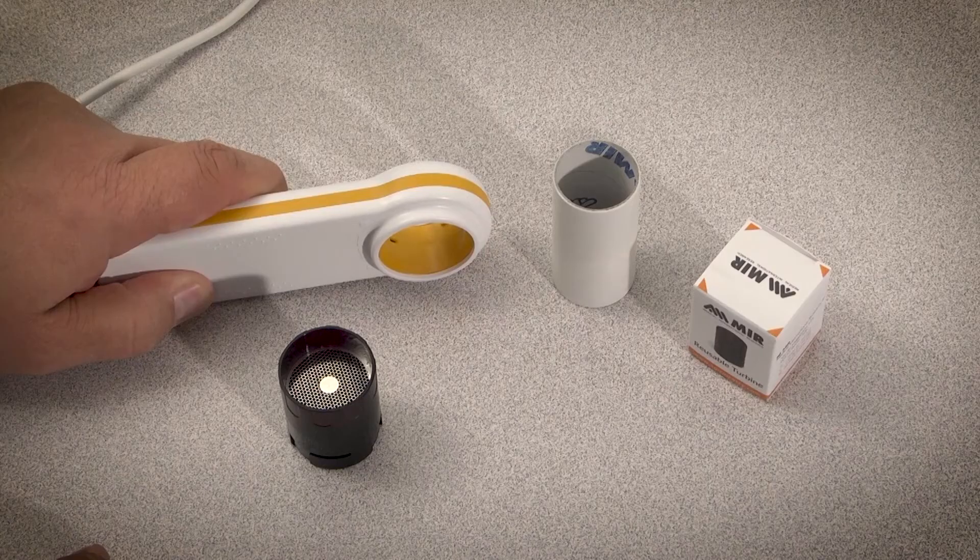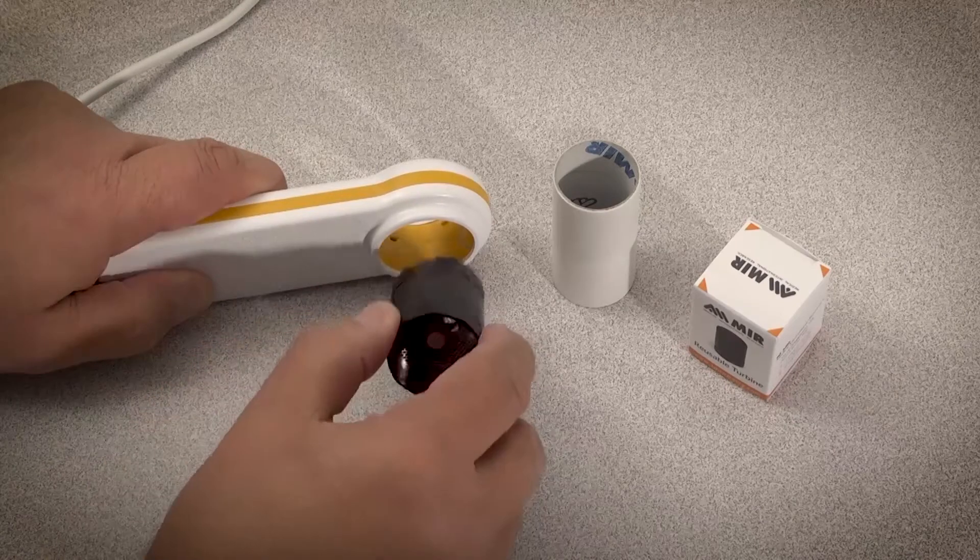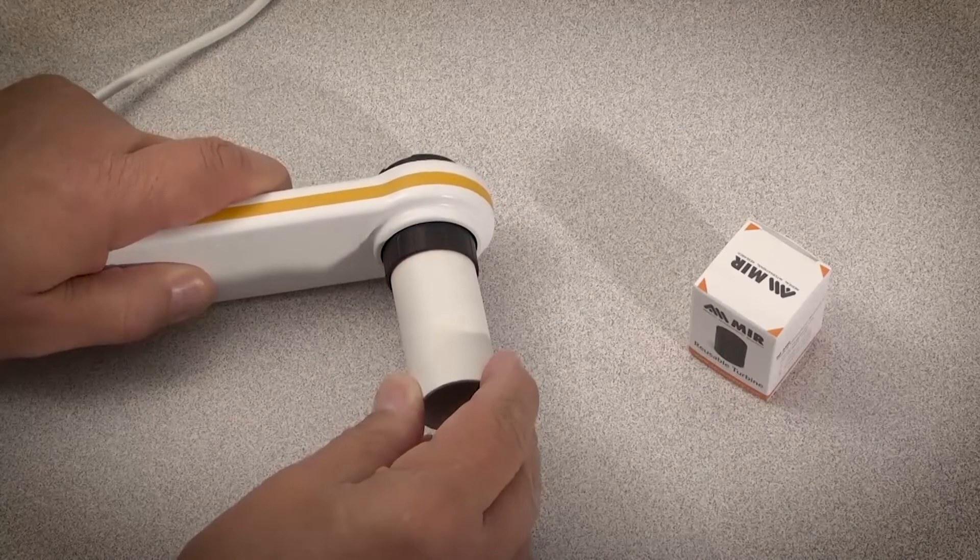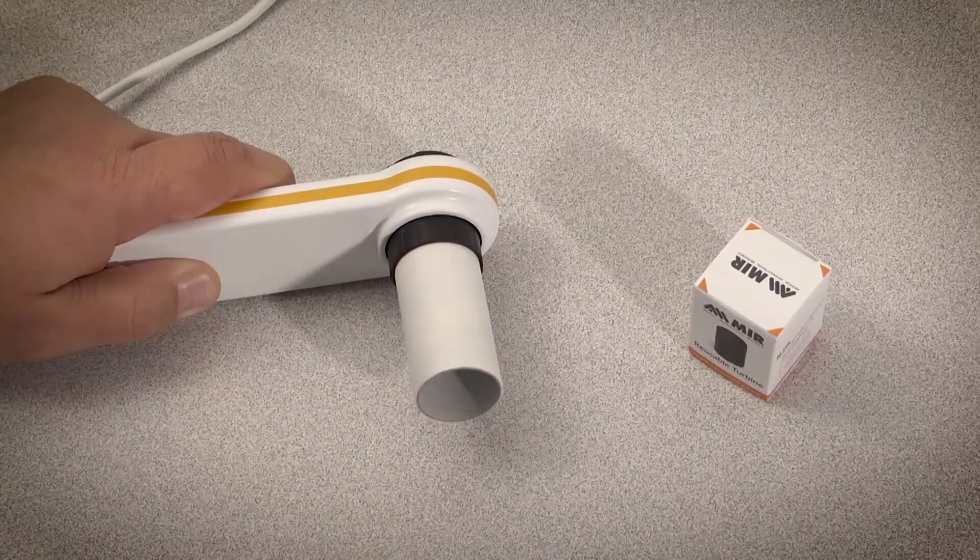To begin the calibration check, first insert the reusable turbine into the flow meter and then insert a cardboard mouthpiece into the reusable turbine.